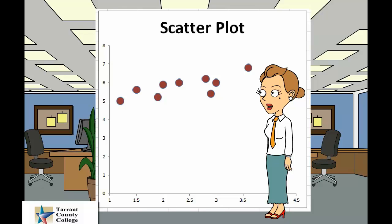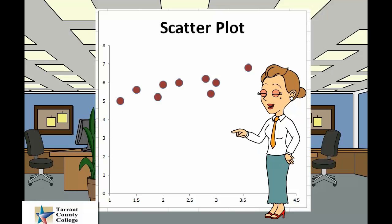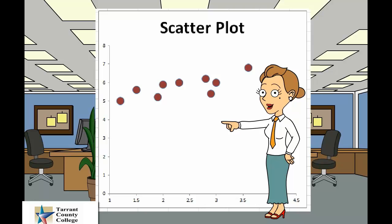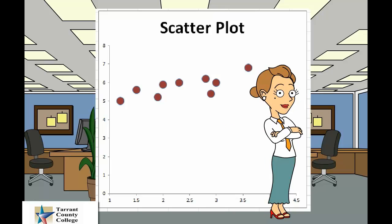Scatter plots are used to determine relationships between two different things. The x-axis is used to measure one event or variable, and the y-axis is used to measure the other. If both variables increase at the same time, they have a positive relationship. If one variable decreases while the other increases, they have a negative relationship. Sometimes the variables don't follow any pattern and have no relationship.